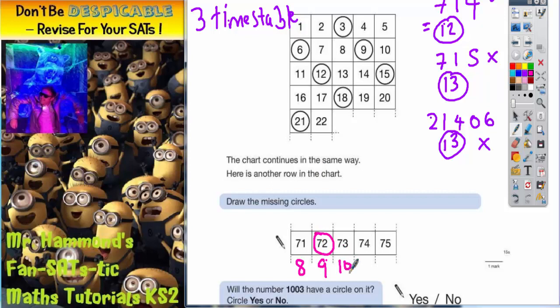7 plus 3 is 10, not in the 3 times table, so no circle. 7 plus 4 is 11, not in the 3 times table, so no circle. 7 plus 5 is 12, which is in the 3 times table, so that needs to have a circle around it. So the only two numbers that are in the 3 times table would be 72 and 75. So they are the only two that need circling.